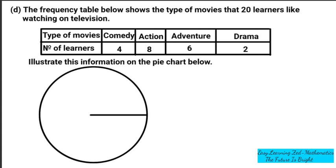First, we're going to find the total number of learners who like different movies. We have 4 for comedy, plus 8, plus 6, plus 2. Four plus 8 gives us 12, plus 6 gives us 18, plus 2 gives us 20. So there are 20 learners in total.